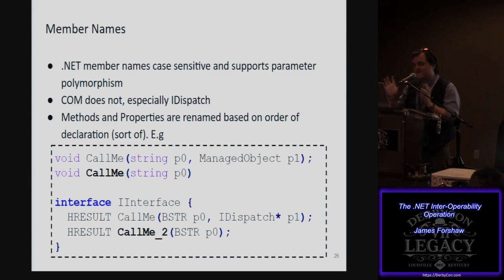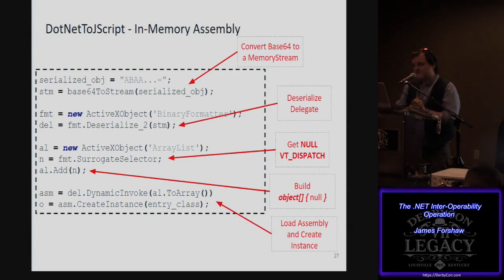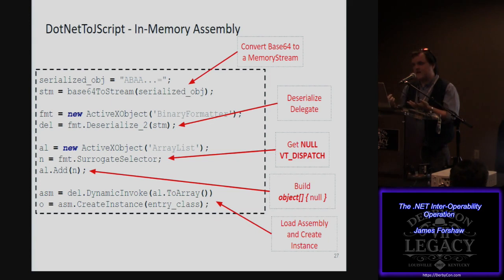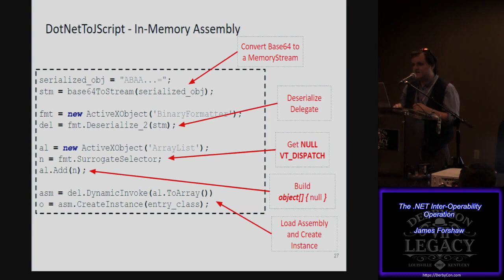Putting this all together as .NET to JScript: basically the ability to deserialize a delegate from a serialized stream. I found that binary formatter was accessible via COM, and binary formatter allows you to deserialize pretty much any type of .NET object. I deserialized a delegate pointing to Assembly.Load, which allowed loading an arbitrary in-memory assembly and executing code in it — effectively bootstrapping arbitrary code.